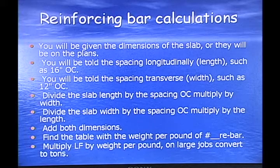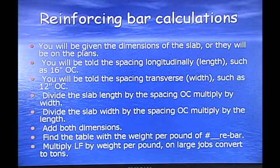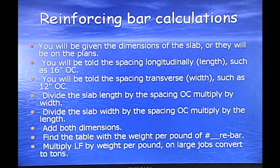Reinforcing bar calculations. You will be given the dimensions of the slab, or they will be on the plans. You will be told the spacing longitudinally — the length — such as 16 inches on center. You will be told the spacing transverse, or the width, such as 12 inches on center. Divide the slab length by the spacing on center multiplied by the width, and divide the slab width by the spacing on center multiplied by the length. Add both of these dimensions together, find the weight per pound for the rebar number you're using, multiply the linear feet by the weight per pound, and on large jobs convert to tons.